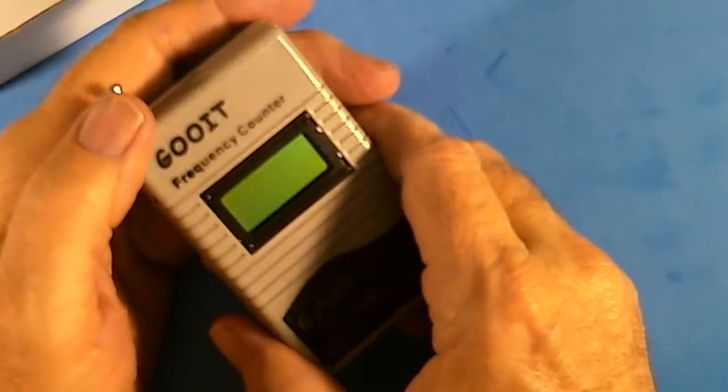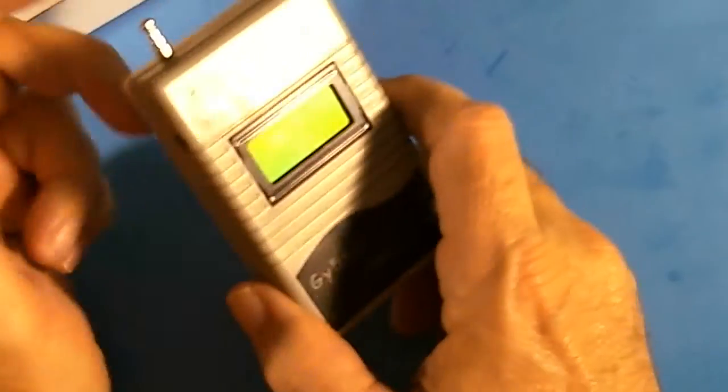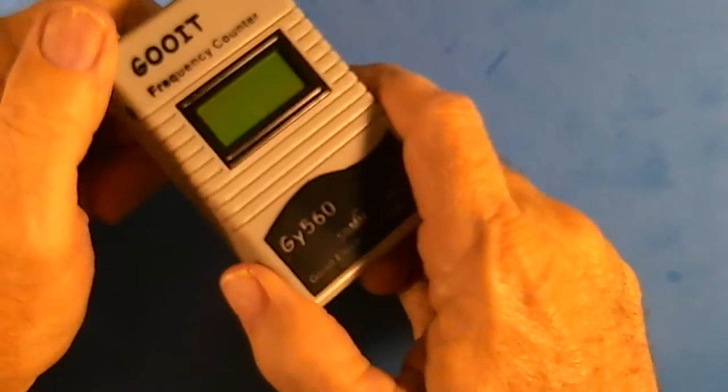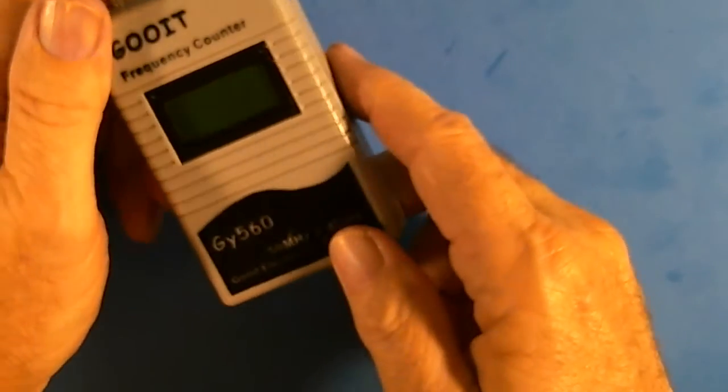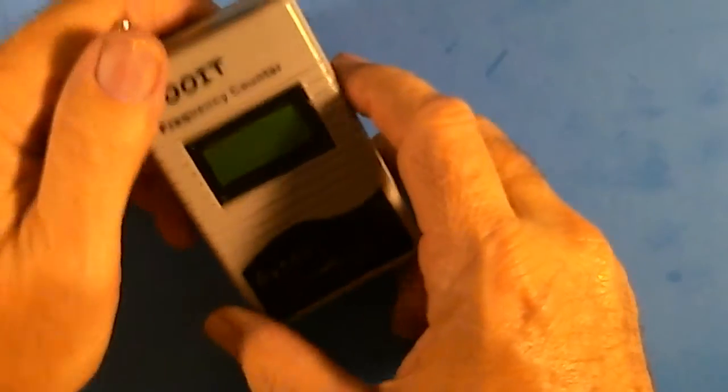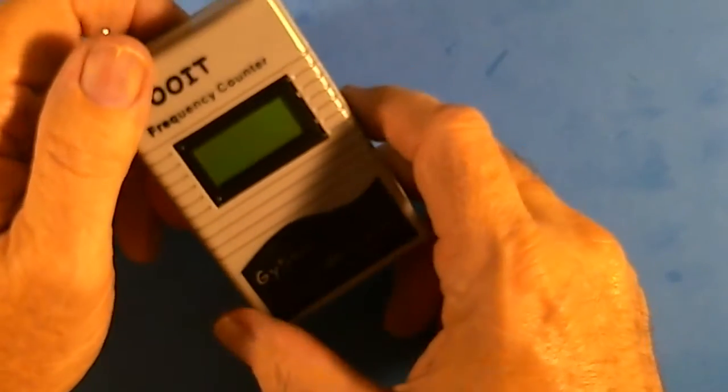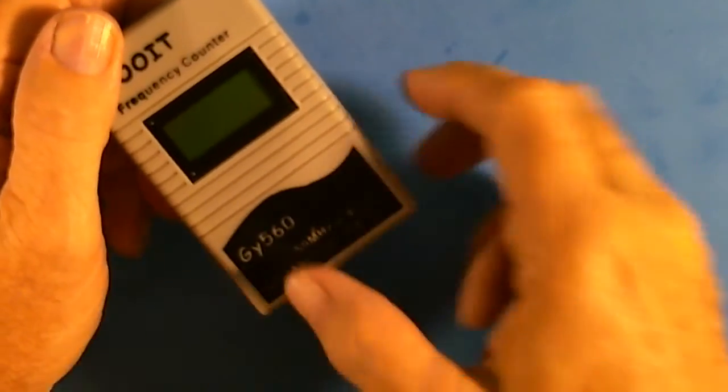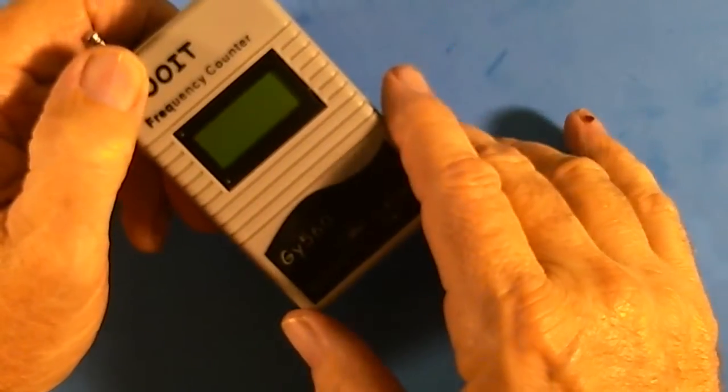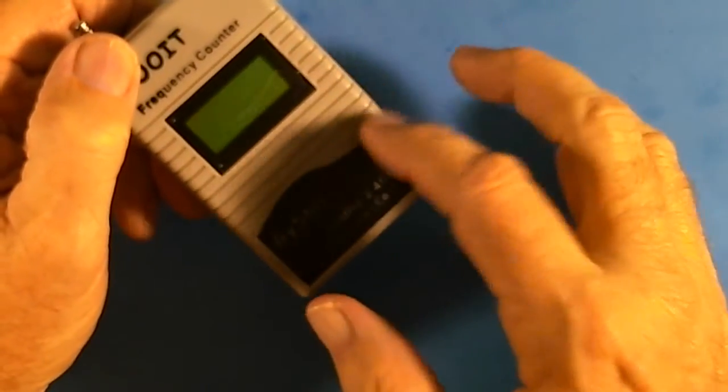Yeah, I got the goo frequency counter, and no, it doesn't find goo in your body and doesn't help you get well. This is just my little howling joke. But this is a handy little device and it does come from Amazon. It's $19.95 right now. There are several versions of this at different prices. This was the cheapest one.